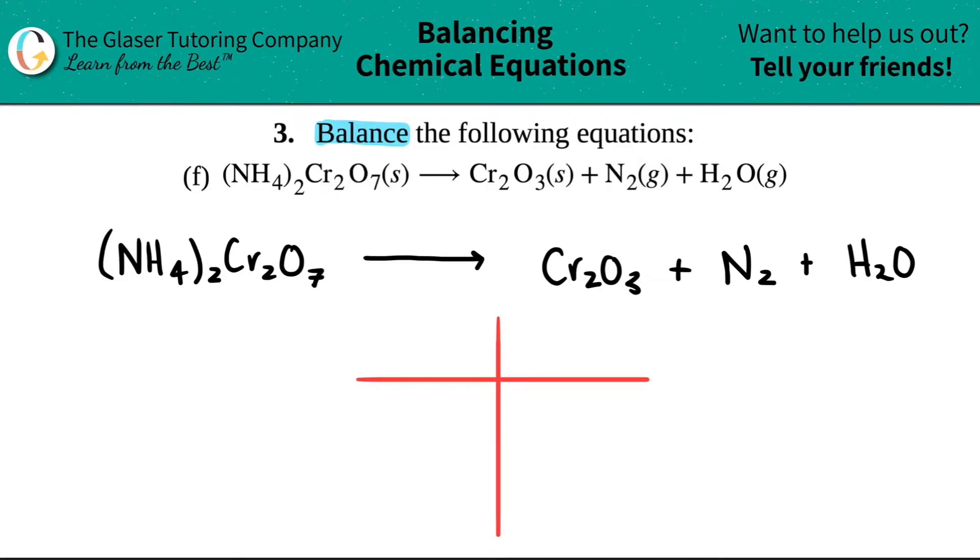It's a two-tier chart. The left-hand side is always your reactants, and the right-hand side is always products.